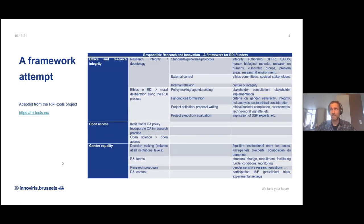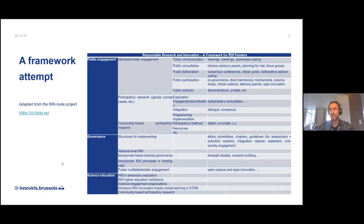We see that each and every dimension has sub-dimensions. So ethics and research integrity is about integrity, deontology, and also ethics in the deliberation of R&D projects, funding call formulation, and the definition of calls. Open access has different subcategories as well — open science, open access policies — and gender equality, exactly the same.